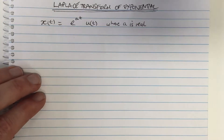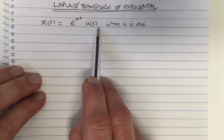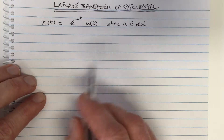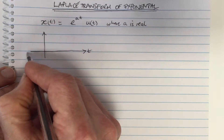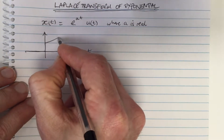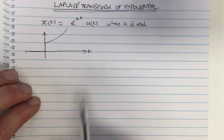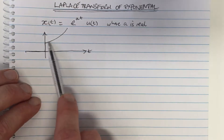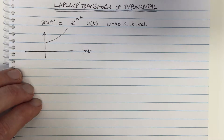Let's look at the Laplace transform of an exponential. This function is e^(at) times the step function u(t), where a is real. First, I like to plot the function to visualize it. It's a time-domain function; the step function means zero for negative time. If a is positive, this is a function that increases exponentially. For a Fourier transform, we can't take it because the energy is unbounded — but we can take a Laplace transform over certain regions, and that's the region of convergence.